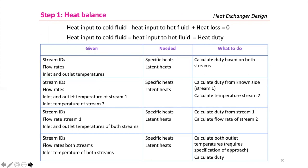Step one is setting up a heat balance: heat input to cold fluid equals heat input from hot fluid equals the heat duty. A guideline table shows how to approach different cases — for example, if stream IDs, flow rates, and inlet/outlet temperatures are all given, you need specific heat and latent heat from tables, then calculate the heat transfer rate from both streams. These are guidelines only.